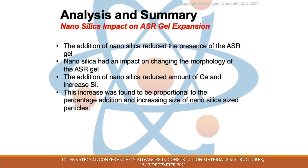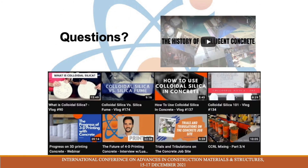To summarize what we saw with nanosilica: a reduced presence of ASR gel. We used this test because normally you have to cut, splice, and apply epoxy — you're looking at ASR gel in a destructed state. Here, you're looking at it undisturbed in an area where it's allowed to grow. The nanosilica significantly reduced the presence of ASR gel, changed the morphology from wispy-like fibers to a more open structure, reduced the amount of calcium in the gels, and increased the silica — ultimately creating an environment where the ASR gel will not be able to thrive, survive, and polymerize. I'd like to open up the floor for any questions and remind everybody to check out our YouTube channel for more information about nanosilica and colloidal silica for concrete. Thanks for your time.